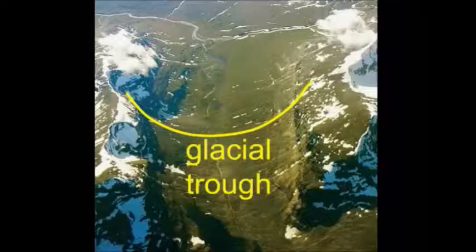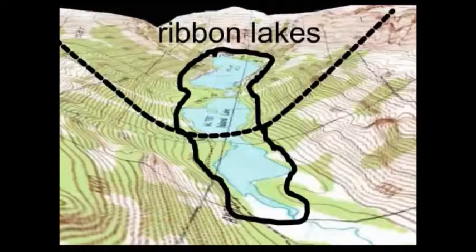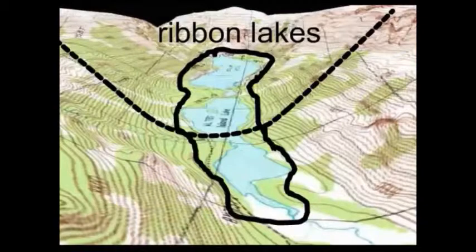After all that ice melts, we get these distinctive landforms. In this case, we see the distinctive U-shaped valley, which is also a good example of what we call a glacial trough. In these glacial troughs, you also find another distinctive feature: ribbon lakes. They're called ribbon lakes because they're very long and narrow, following the valley shape. Water collects in these rather deep lakes found at the bottom of a U-shaped valley.